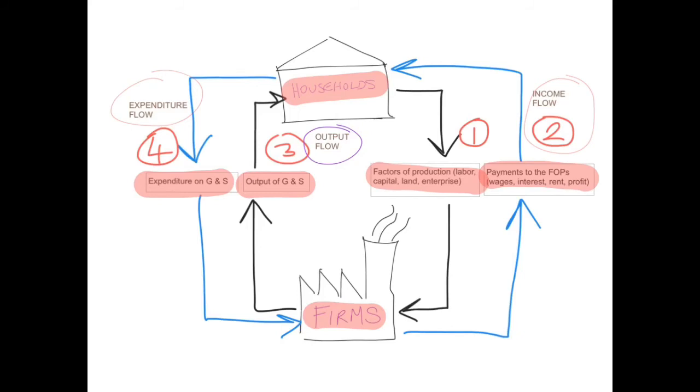Also, when the firms take the factors of production, they produce output, so that gives us the output flow. When consumers receive the output, they spend money on it, which gives us the expenditure flow—expenditure on goods and services.